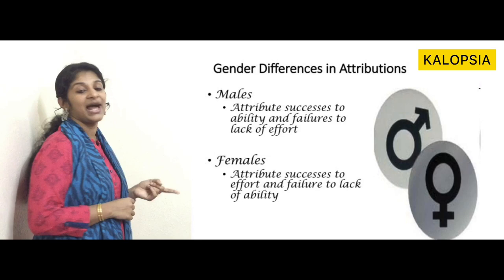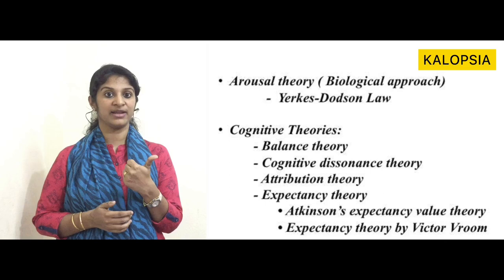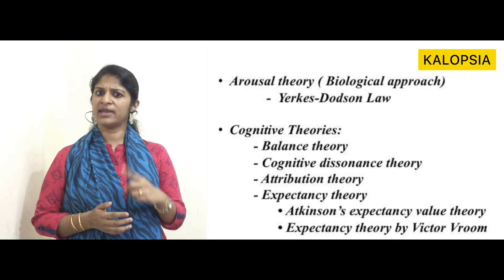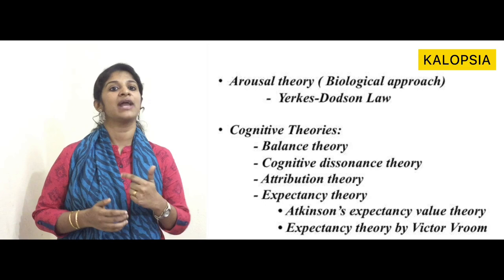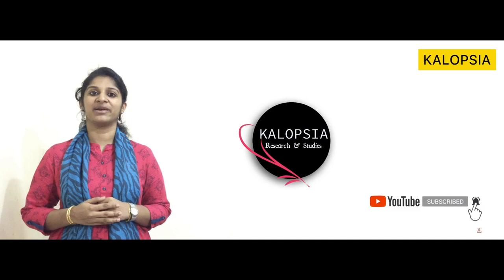Today we learned about arousal theory, the Yerkes-Dodson law, and cognitive theories of motivation. In cognitive theories we discussed balance theory, cognitive dissonance theory, attribution theory, and expectancy theory — including theories by Victor Vroom and John Atkinson. I hope the theories are clear. In the next video I'll cover types of motives. Please subscribe and share the video with your friends!